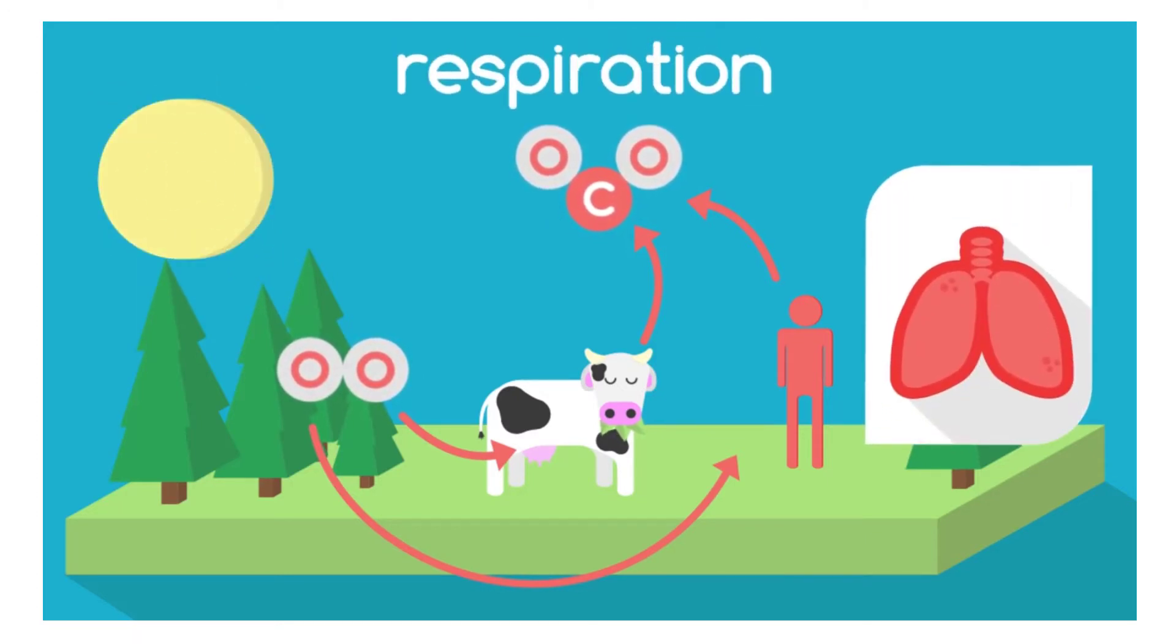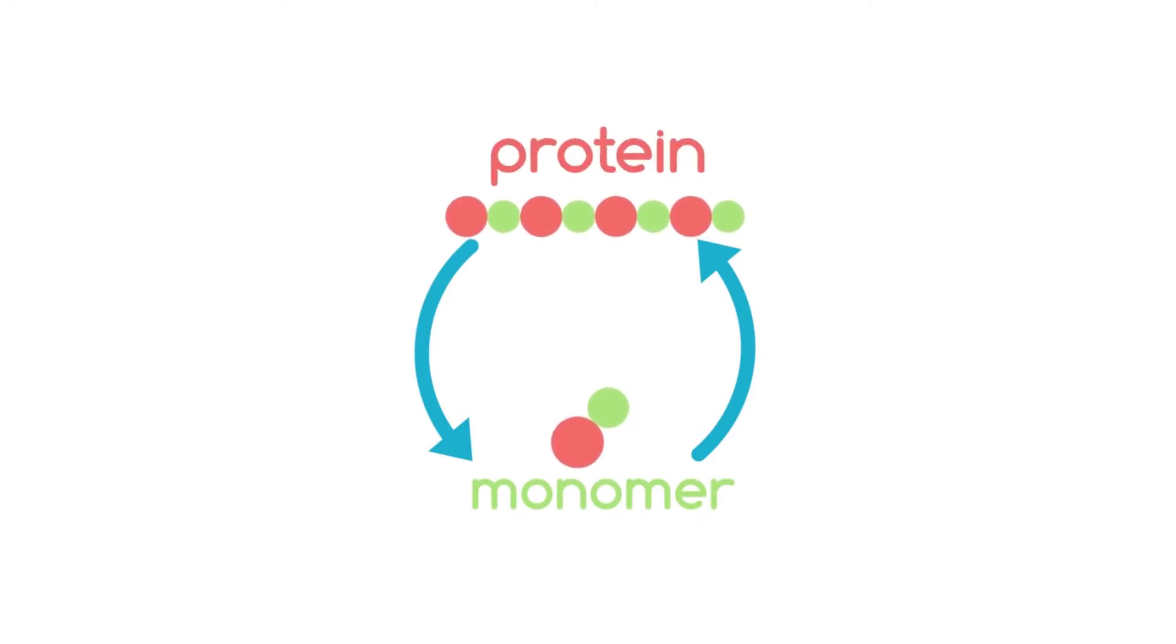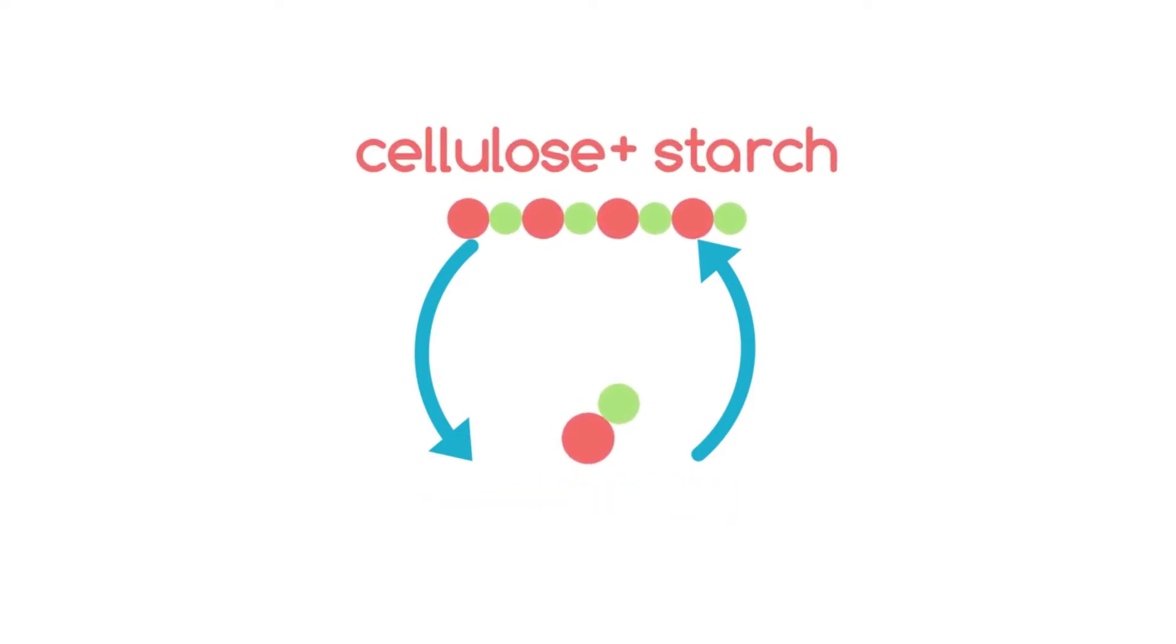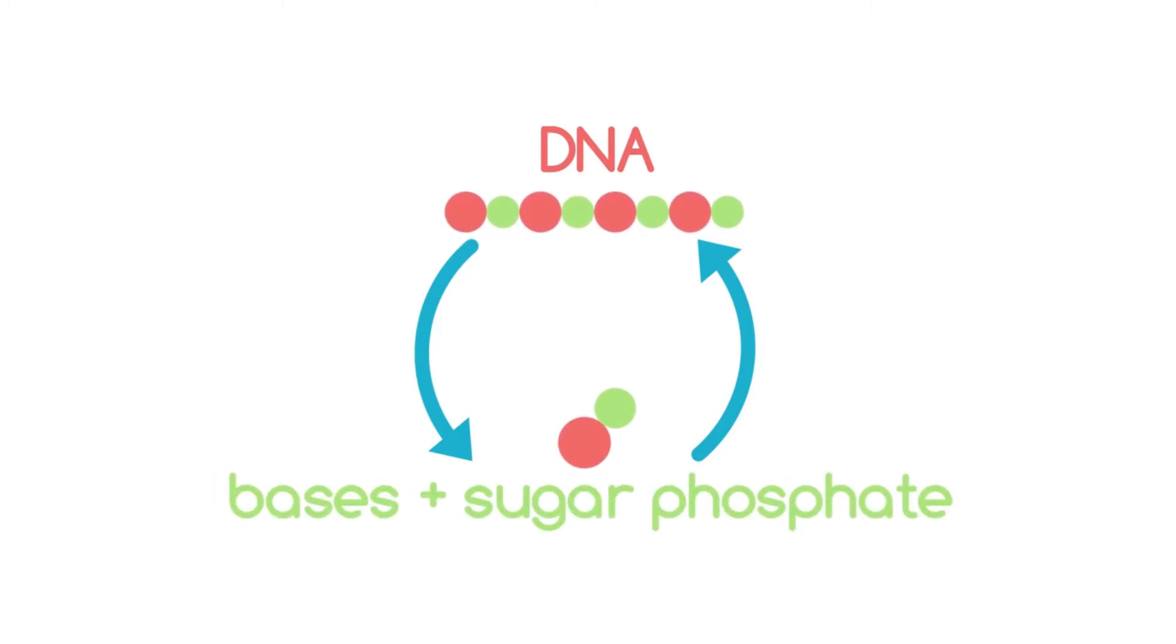This process is called respiration. Now let's put some details into this. As they grow all living things have to build up large polymer molecules from small molecules. Protein for example to make your skin and muscles and other organs comes from joining amino acids together. Cellulose and starch to make the leaves, flowers, trunks, roots and all parts of plants from joining sugars and DNA to make the genes which control living things from the bases and the sugar and phosphate.